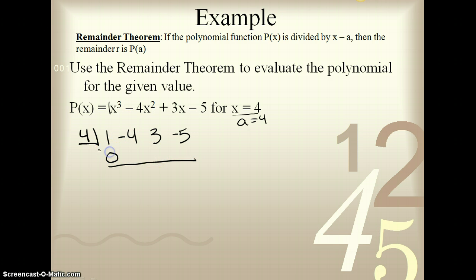Leave a gap. Put 0 into the first one and add. 0 plus 1 is 1. 4 times 1 is 4. Add again. Negative 4 plus 4 is 0. 4 times 0 is 0. Add again. 3 plus 0 is 3. 4 times 3 is 12. Add again. 12 minus 5 is 7. Therefore, 7 is what we're looking for. 7 is the answer to this question.